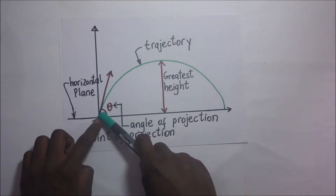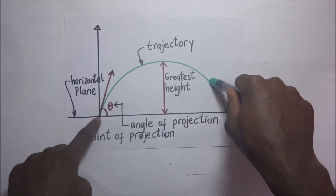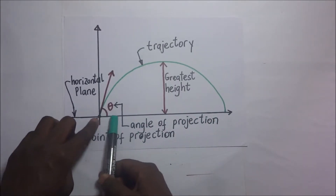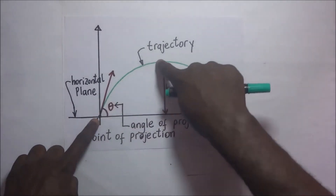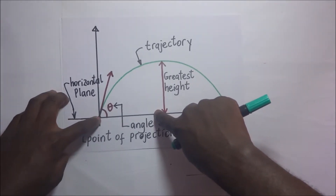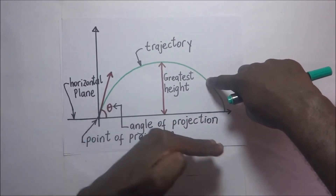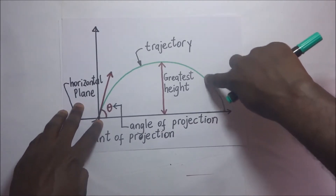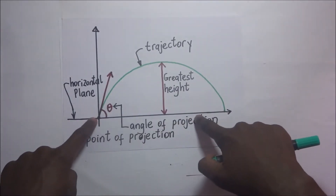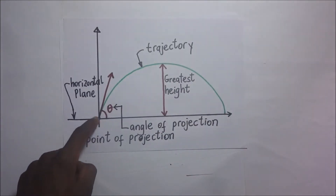The time of flight is the time taken by the projectile to move from its initial position to the final position along the trajectory. As the particle moves, it makes a displacement in the horizontal (x) direction, and that displacement is what we call the range. If we need to find how far the particle has moved in the horizontal direction from the initial position, that distance is the range.